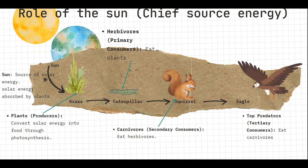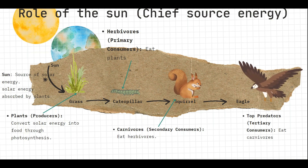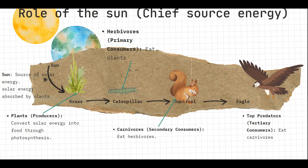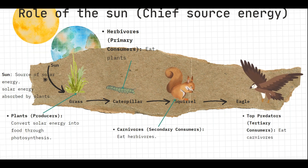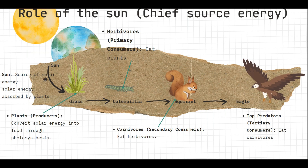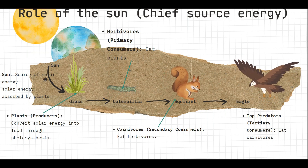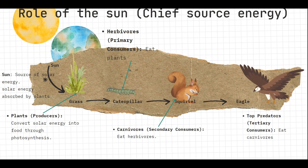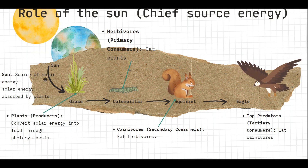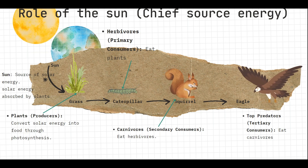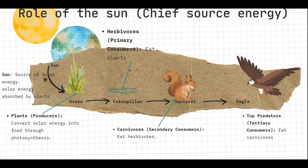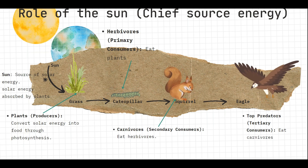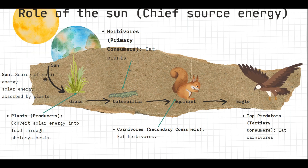The solar energy is absorbed by plants. The plants, which are the producers, convert solar energy into food through photosynthesis. The herbivores, which are the primary consumers, eat the plants and gain energy. The carnivores eat the herbivores and also gain energy. The tertiary consumers eat the secondary consumers and gain energy as well. So the sun is the primary source of energy, and this energy is transferred from one organism down to another.